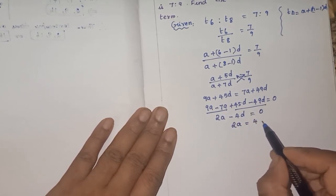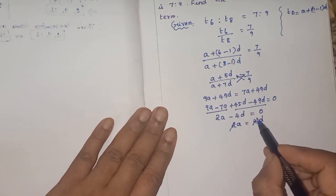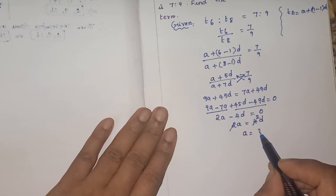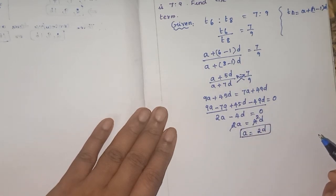45D minus 49D is minus 4D is equal to 0. So from this, 2A is equal to 4D. So we can cancel this 2 and 4. 2 twos are 4, so A is equal to 2D.